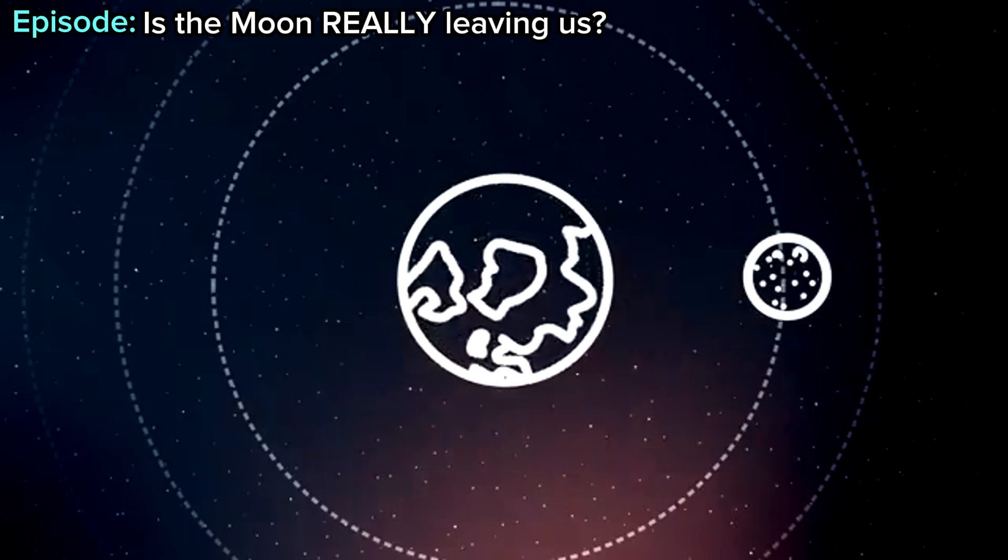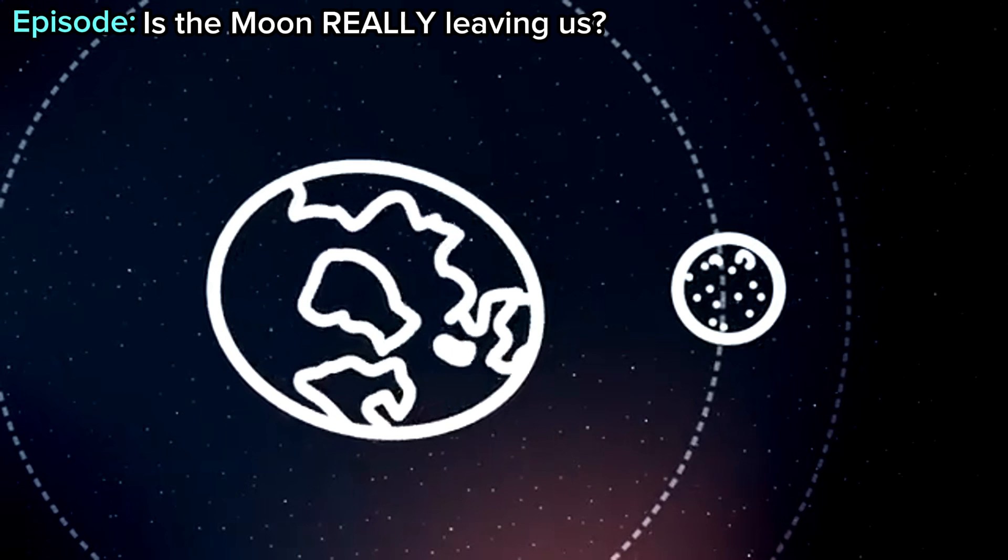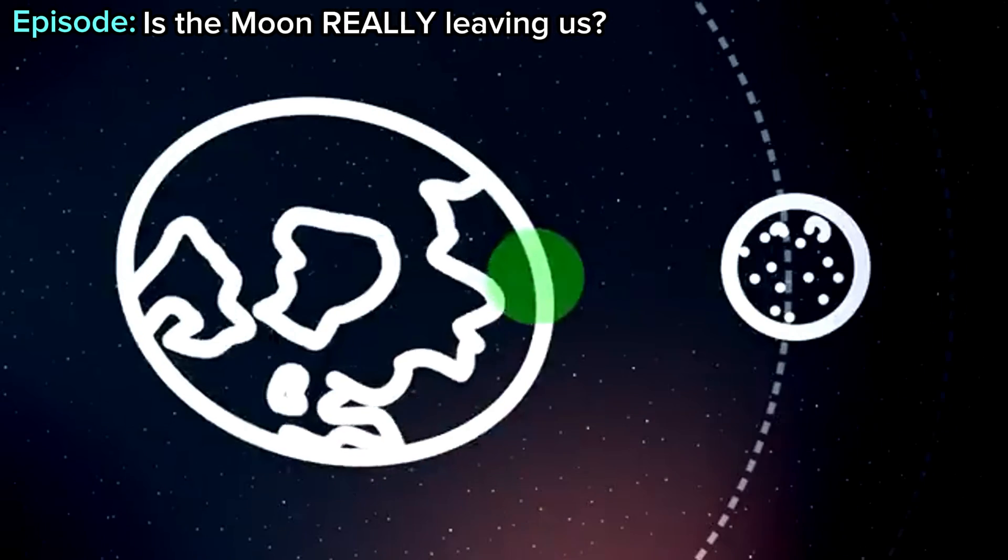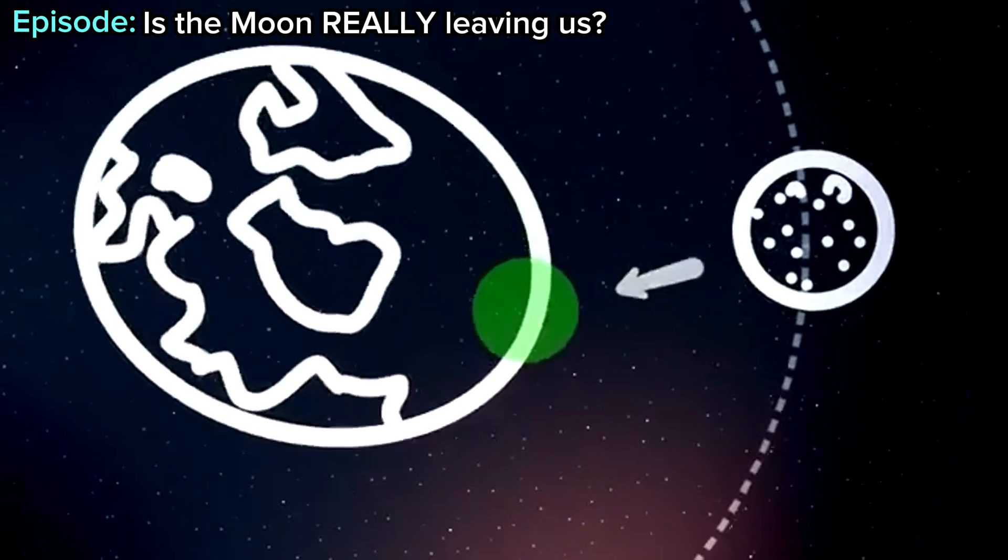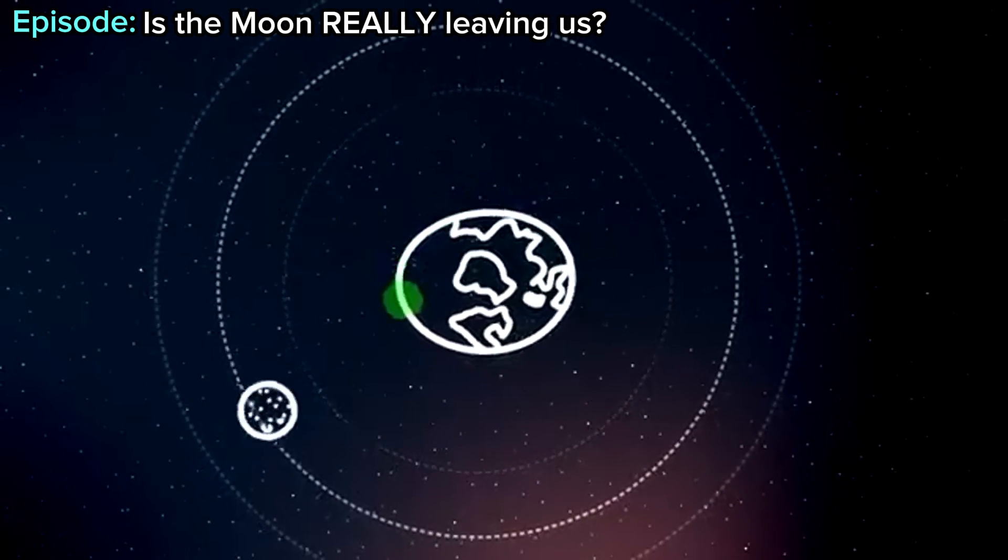But you're also rotating. So instead of looking like this, you look like this. You're always re-stretching because you're rotating. The moon's not being pulled to your center, it's being pulled towards this weird spot. That's what accelerates the moon into higher orbit.